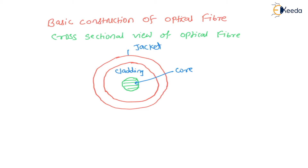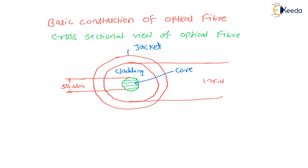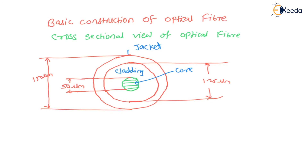On average, the diameter of the core is approximately 50 micrometers — though it will depend on the application, and we will see different modes of operation in the next session, where this diameter varies. The diameter of the cladding is around 125 micrometers, and the diameter of the jacket is around 150 micrometers.